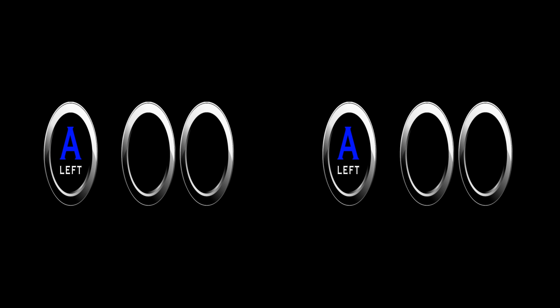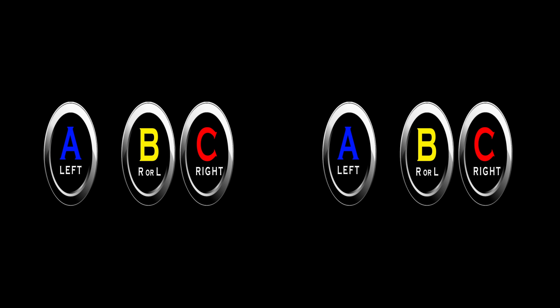Howdy! This is Sean Fairburn with MyO3D. MyO3D is a more advanced way to shoot 3D. It captures multiple interoculars at the same time: a small interocular, a medium interocular, and a wide interocular using an A camera, B camera, and a C camera.